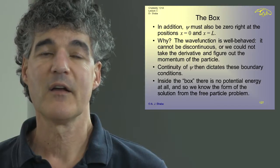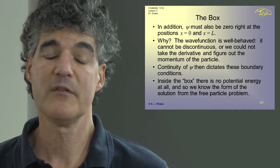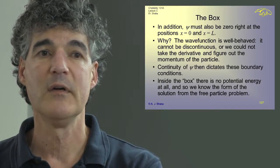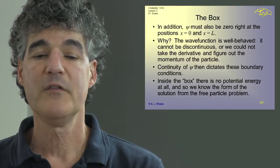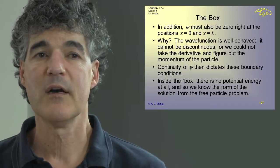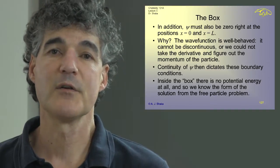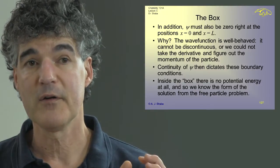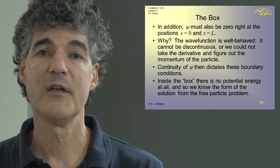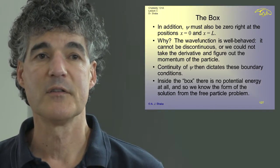The continuity of psi is the reason why we can say it's zero at the edge. The wave function must have a zero at x equals zero and another zero at x equals L. But inside the box, there's no potential energy at all. Until the particle encounters the edge, it pretty much thinks it's a free particle. We already solved the free particle wave function in a previous lecture, so we can piggyback on those solutions.